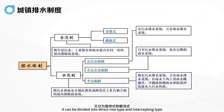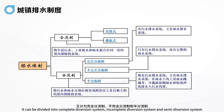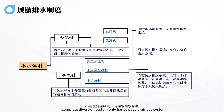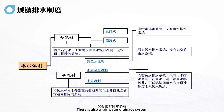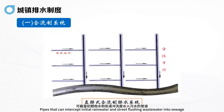The combined system can be divided into direct row type and intercepting type. The diversion system separates sewage and rainwater into two or more independent sets of channels. It can be divided into complete diversion system, incomplete diversion system and semi-diversion system. The complete diversion system has both a sewage drainage system and a rainwater drainage system. The incomplete diversion system only has a sewage drainage system with no complete rainwater system. The semi-diversion system has both, with rainwater jumping wells on rainwater dry ditches to intercept initial rainwater and street flushing wastewater into the sewage system.